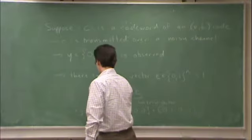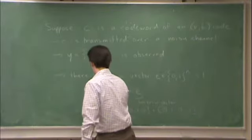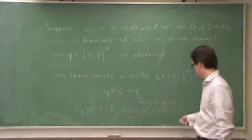So in that case, y would be 0, 1, 0, 0. So in other words, the second bit is flipped.